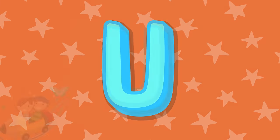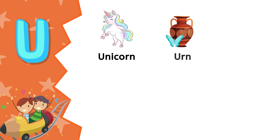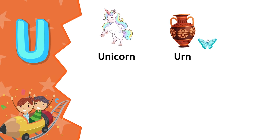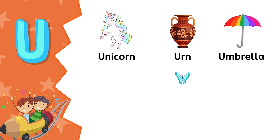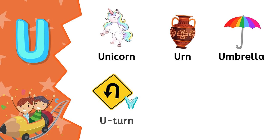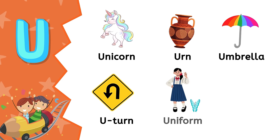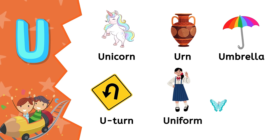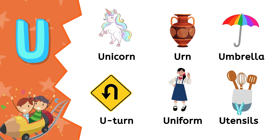U. U is for unicorn. U is for urn. U is for umbrella. U is for u-turn. U is for uniform. U is for utensils.